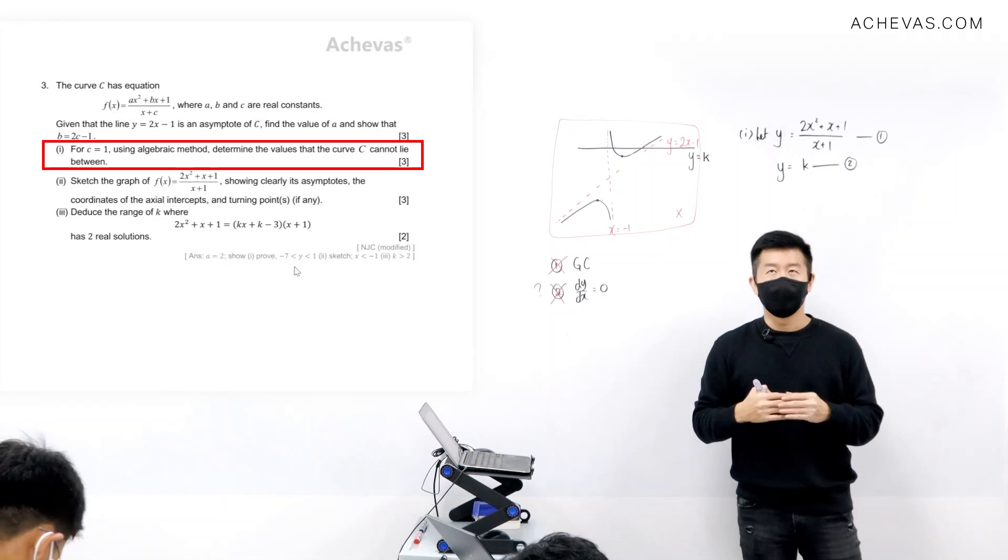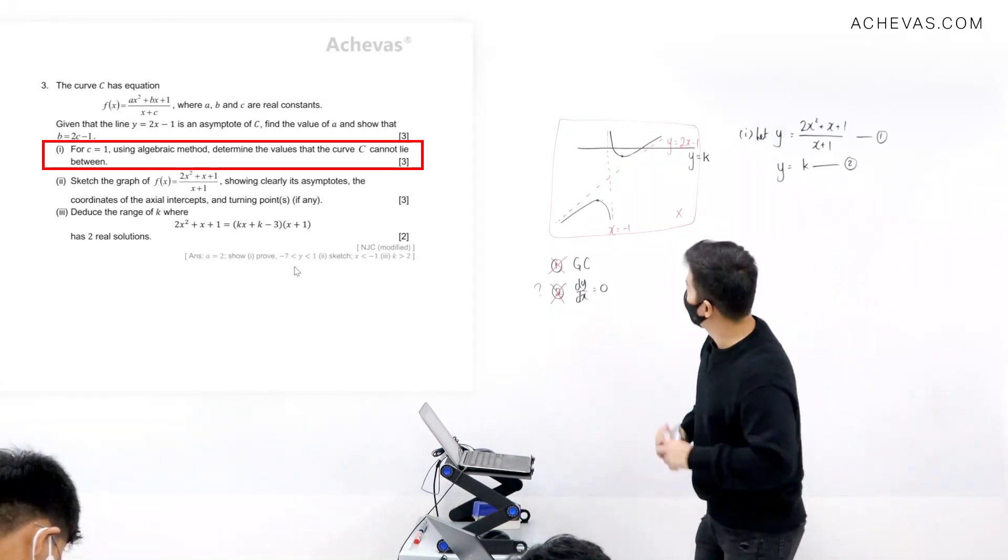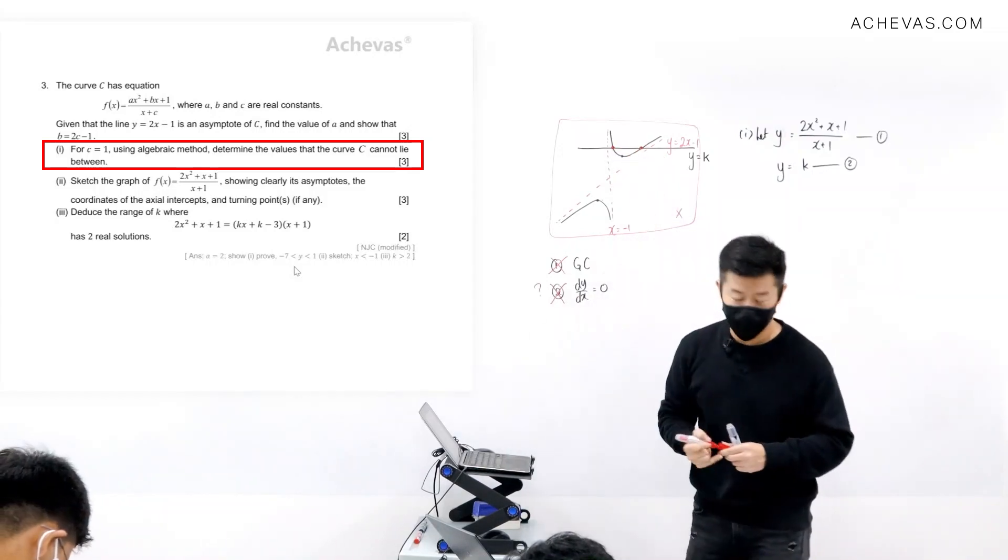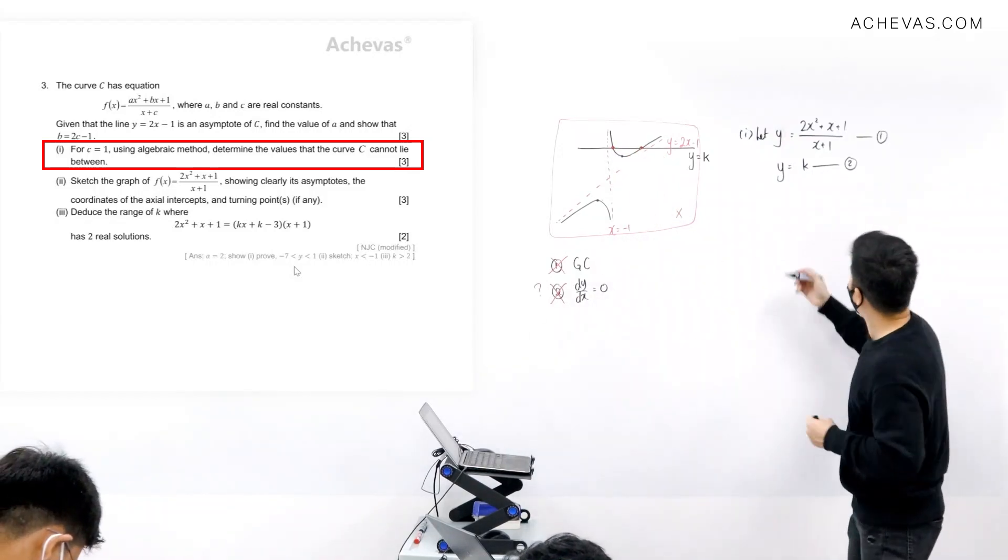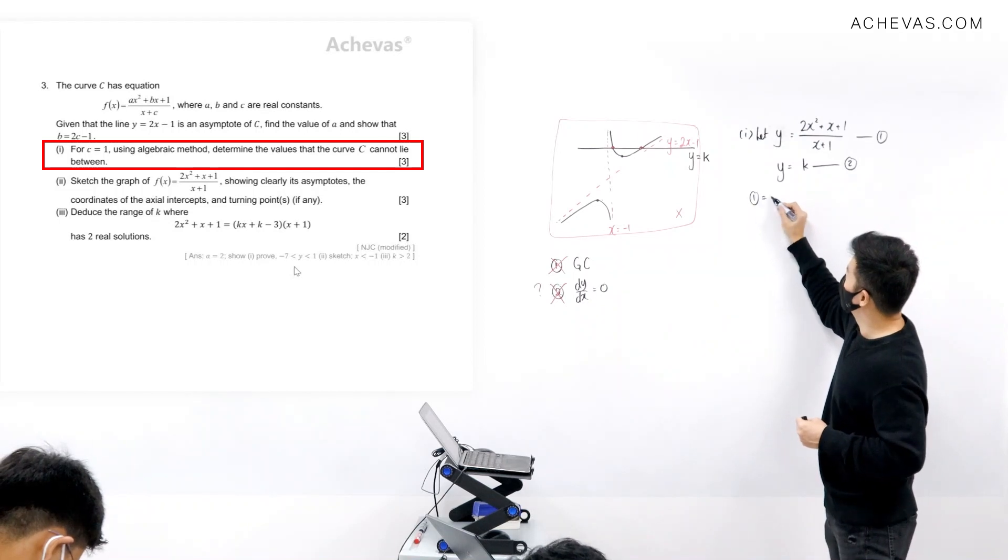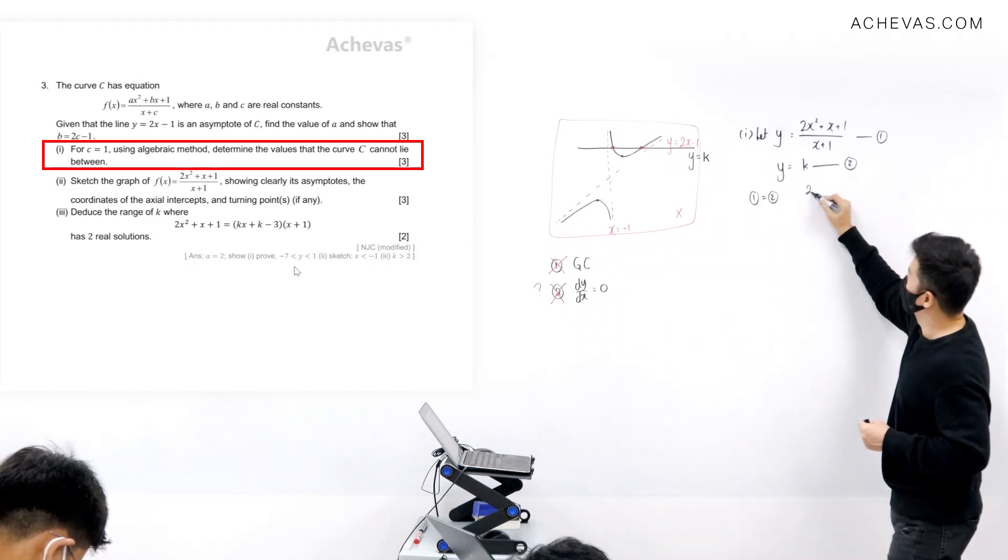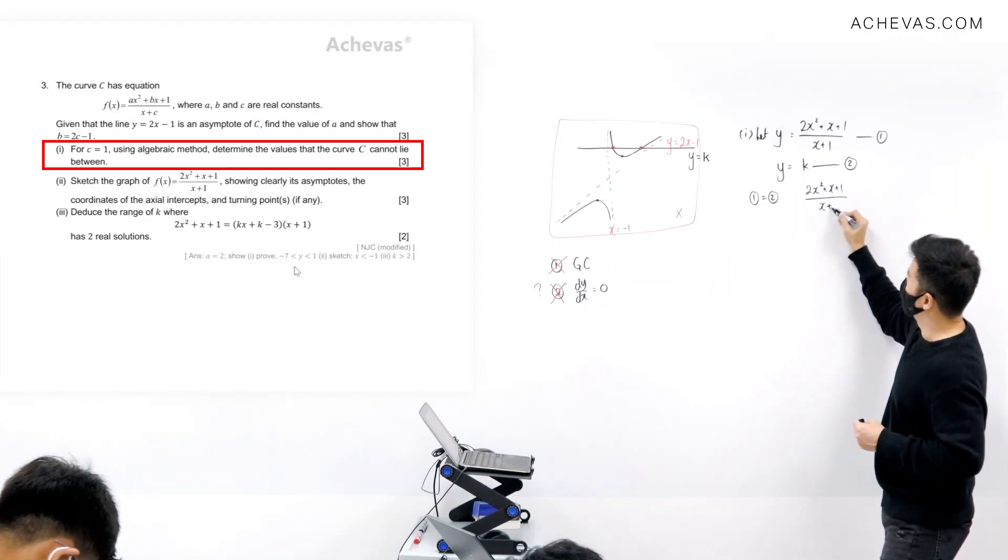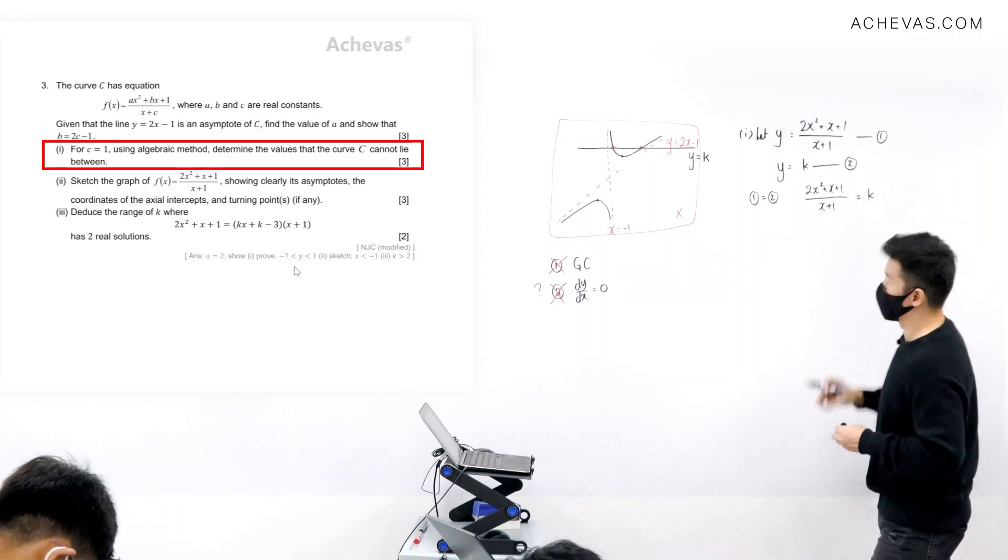Okay, so when I start to analyze this, then I am analyzing the intersection between the horizontal line and the curve, correct? So I will do that. I'm going to let equation number one be equal to equation number two. We have 2x squared plus x plus 1, divided by x plus 1, equal to k.